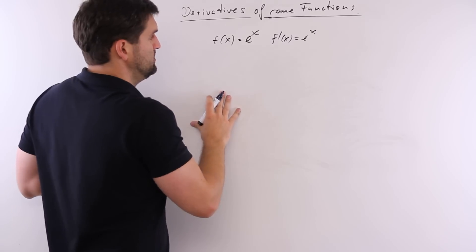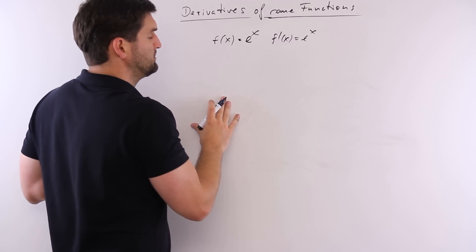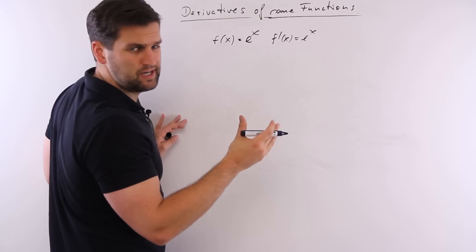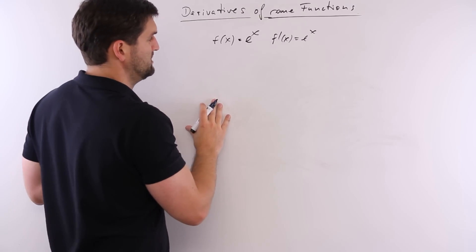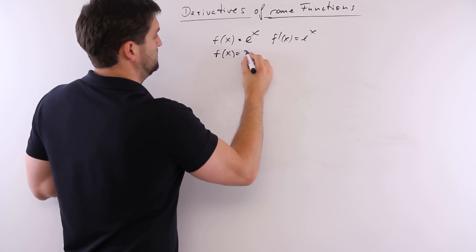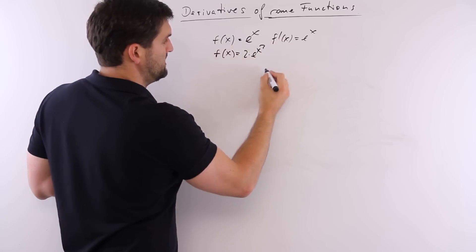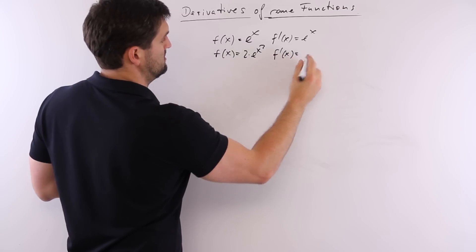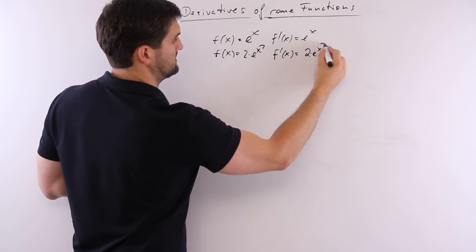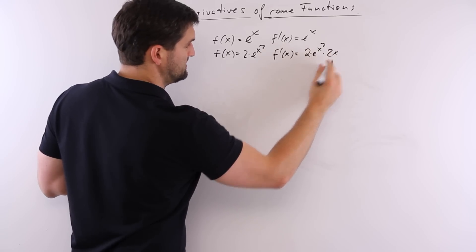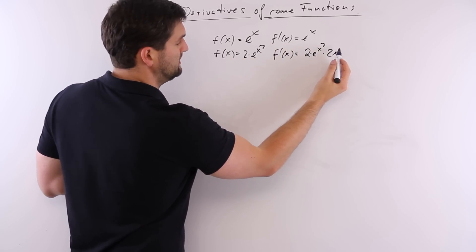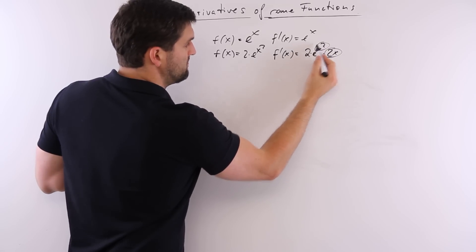I have another video where it's going crazy and you should pay attention, like 2 times e to the power x squared. So, the derivative would be 2 times e to the x squared times 2x because you have to do a multiplication with the derivative of the exponent.